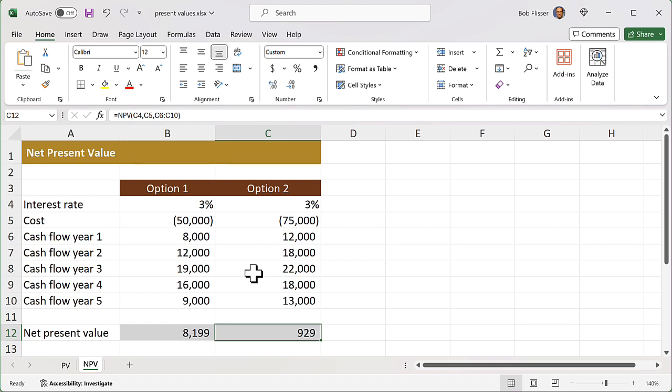So the result of this is pretty clear. The first option, which costs less and returns less, is a much better value than the option that costs more and returns more. PV or NPV might sound difficult or scary, but you see they really aren't complicated, and they can be pretty useful. So until next time, my name is Bob, and this has been Between the Sheets.